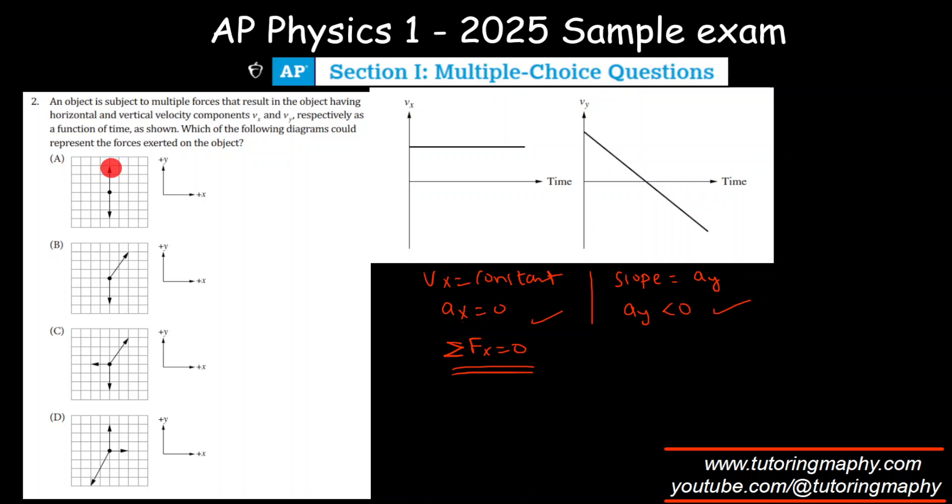But it cannot be A because the vertical forces are nullifying each other. They are of same length. Same length arrows means the vertical force is zero, but that doesn't make sense because if the net vertical force is zero, the acceleration will also be zero. But for us, the net force should be negative, so it cannot be A.